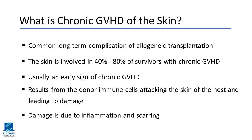Chronic graft-versus-host disease of the skin can be a common long-term complication of having a donor transplant. It's usually an early sign of the systemic or multi-organ form of chronic graft-versus-host disease. Graft-versus-host disease is where the donor cells, in addition to attacking and eradicating cancer cells or other abnormal blood cells, sometimes recognize healthy tissue in the patient and attack them, causing this overwhelming inflammatory disorder.